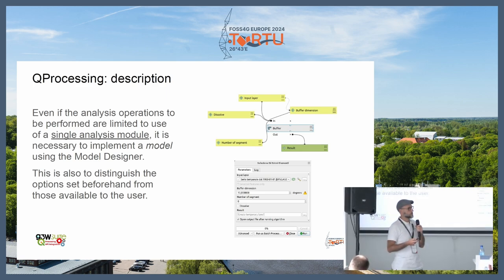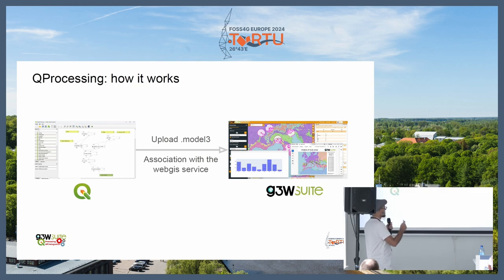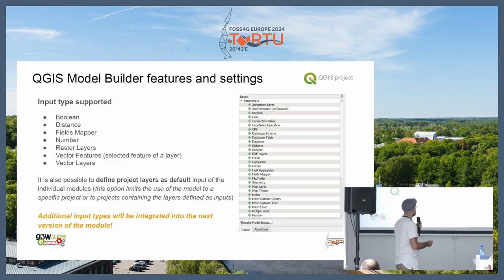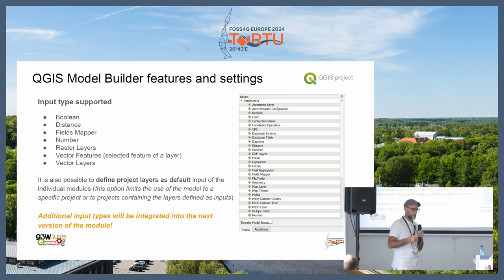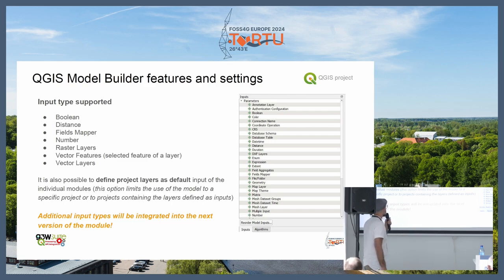In this way, if you want to use even just one algorithm, you have to make a model. Using the same paradigm at the base of the GSTW suite, you take your .model3 file, upload it inside the GSTW suite, and have the same model running there. We made a translation between the available desktop inputs of Q-processing into relative web inputs. At the moment, the supported inputs are: boolean input, distance input, field mapper, number, raster layer, vector feature, only selected features for the layer, and vector layers.